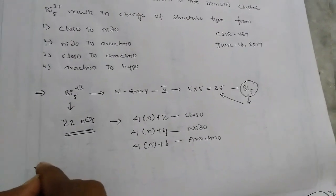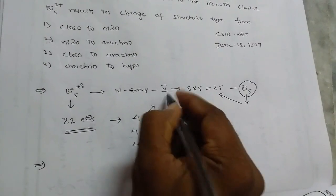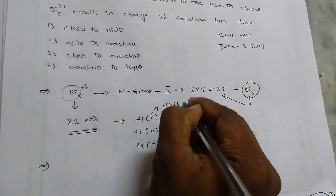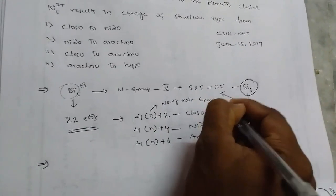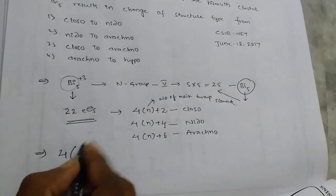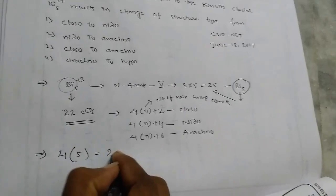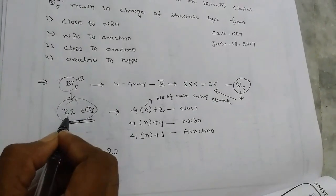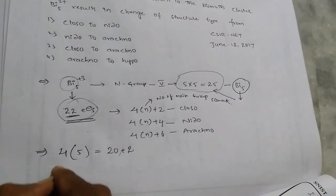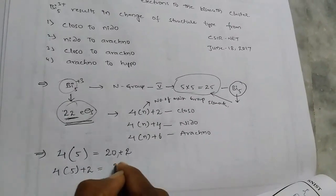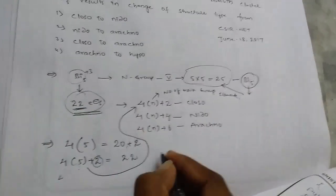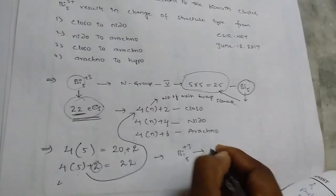So we have 22 electrons only. N means here we need to give the number of main group elements. So here, 4 into how many bismuth elements are there? Five. So 4 into 5, totally 20 electrons, but in our Bi₅³⁺ we have 22 electrons. So we need to add plus 2 electrons. 4 into 5 plus 2 electrons, that is 22. So this equals to 4n+2 cluster. Thus, bismuth 5 plus 3 belongs to closo.